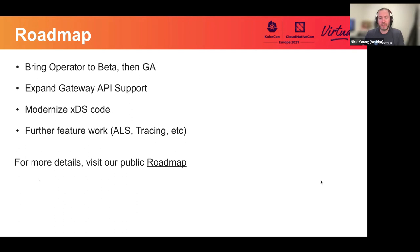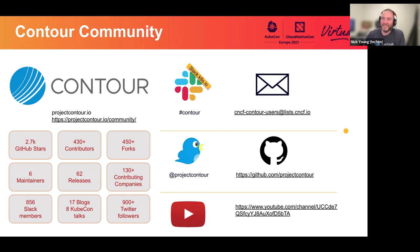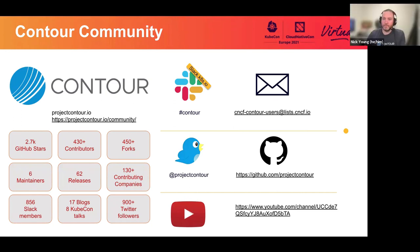The last roadmap item is continued feature work: ALS (Envoy's Access Logging Service) to configure a remote logging service for Envoy logs, as well as tracing and other well-requested features we're working our way down to. We're also working on Windows support and making sure Contour can deploy onto IPv6 clusters. Additionally, FIPS compliance — specifically FIPS 140-2 compliance — is required by many customers and community members, so we're making sure Contour works using a specific set of TLS cipher suites.